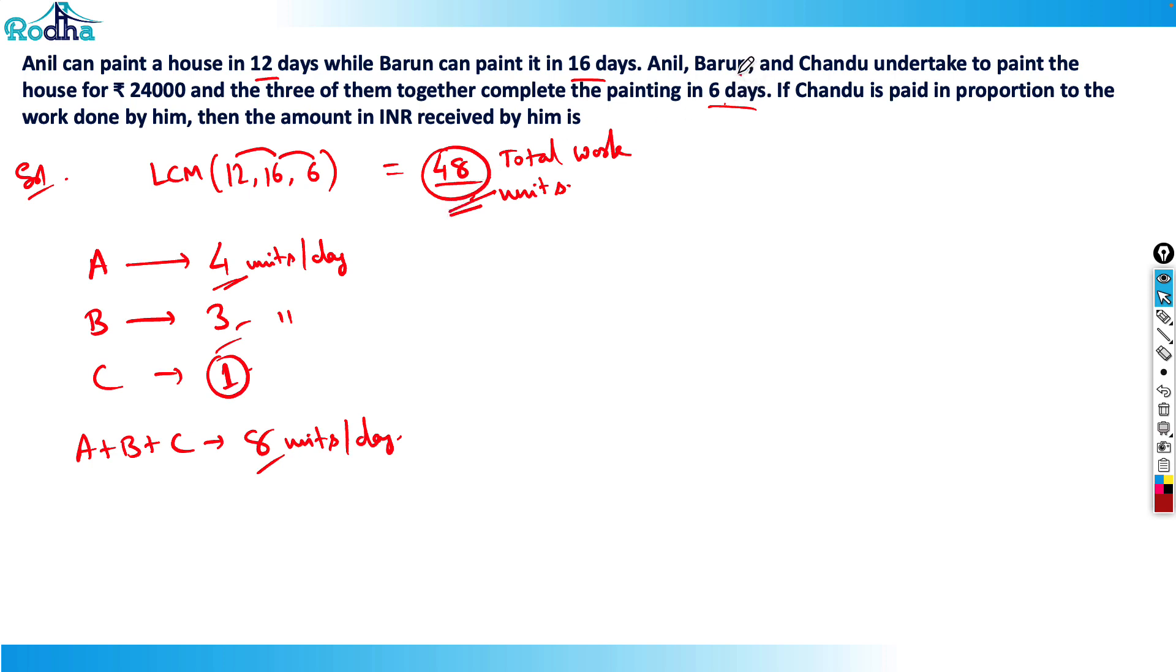Out of 48 units work, A has contributed 24 units, B has contributed 18, and C has contributed 6. Because they're working at a rate of 4 units per day for 6 days, so A is 24 units. 3 units per day for 6 days, B is 18 units. And C is 1 unit per day for 6 days, so C is 6 units.